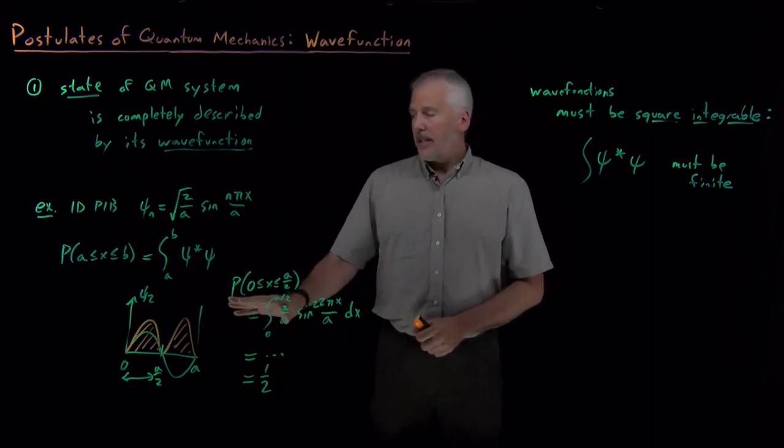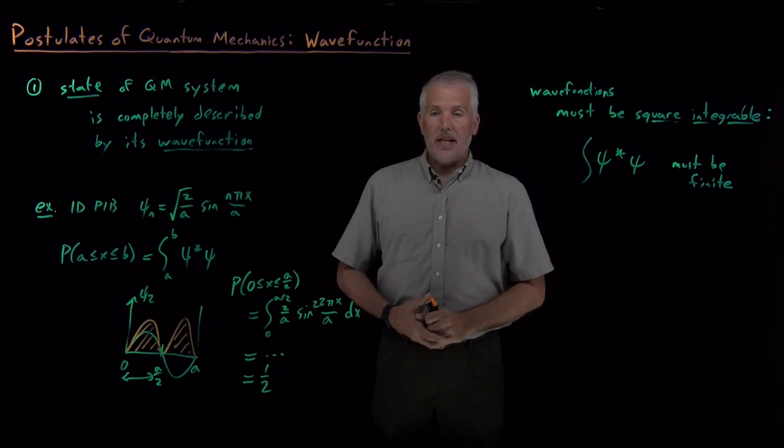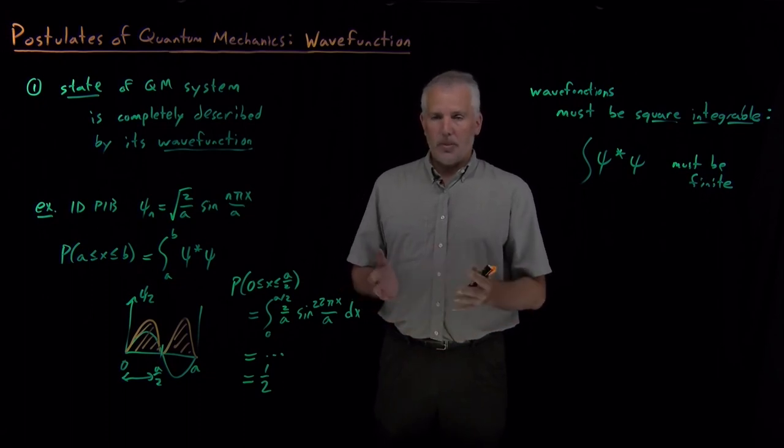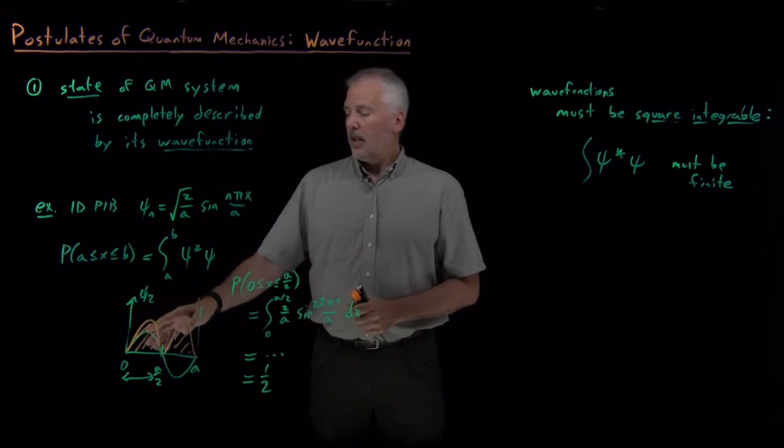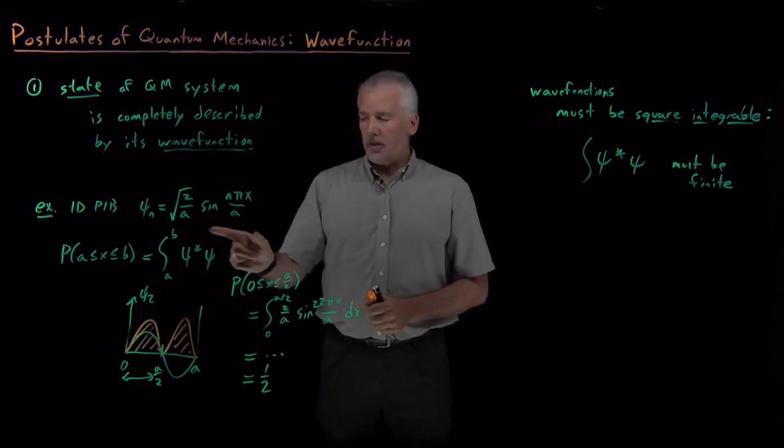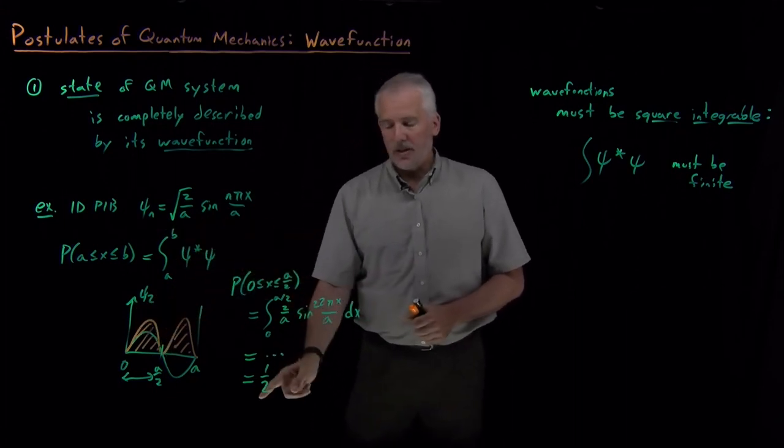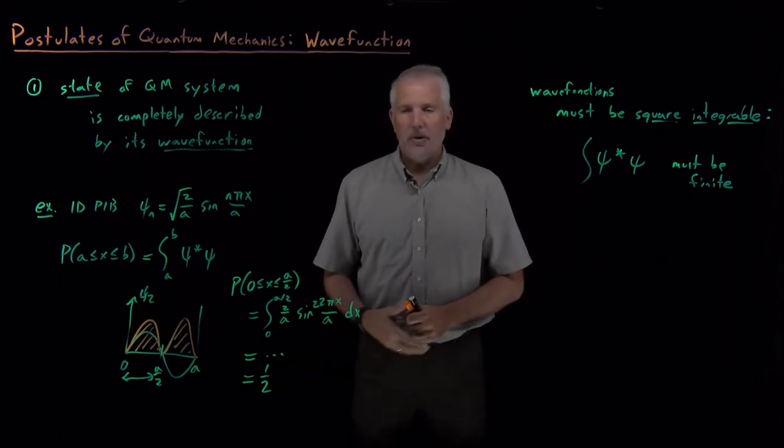That's an example of how I can find out something about the state of the system—where is the particle, with what probability does it occupy some regions? I can obtain that from the wave function. I need to know the wave function, and then there's a recipe for finding the answer to the question I'm interested in.